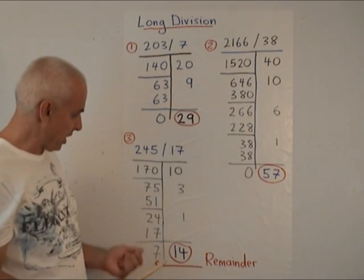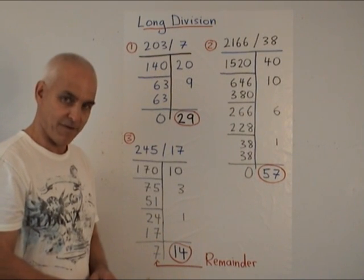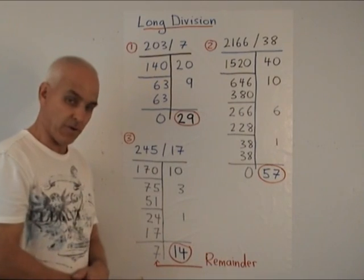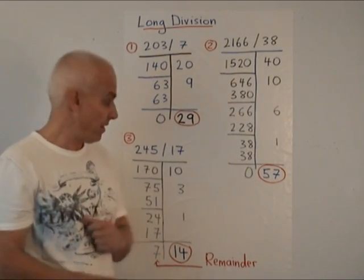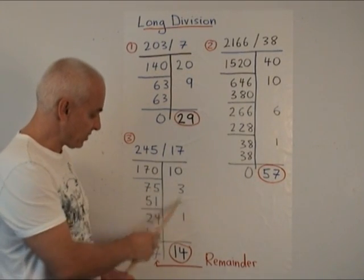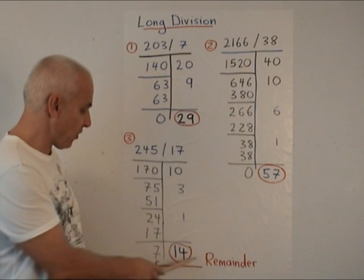But now we're in a situation where we can't subtract any more 17s from 7. 7 is too small. So we get a remainder. The division doesn't quite work out. This divided by this is not a natural number. But nevertheless, we subtracted 14 of these 17s and we have 7 left over this remainder.